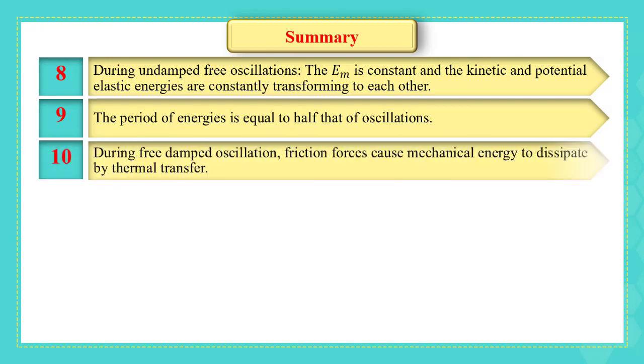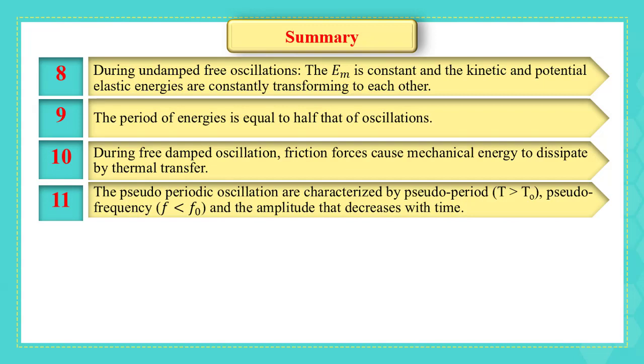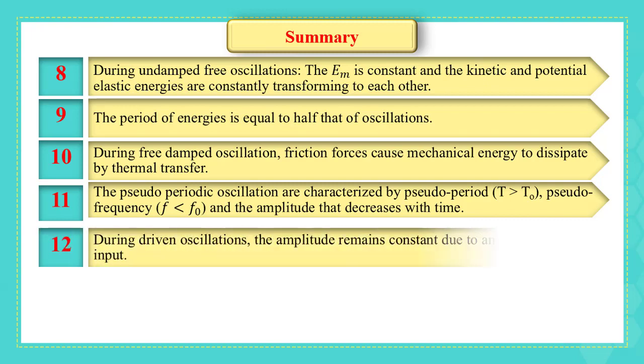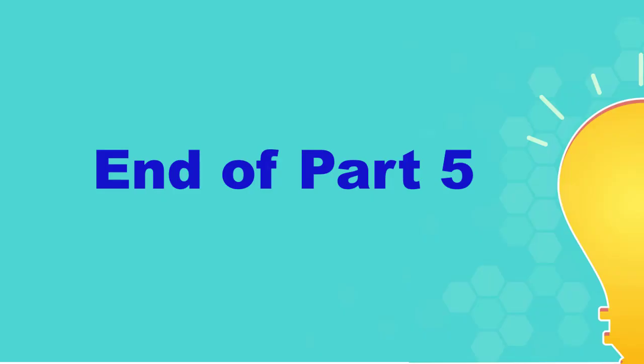During free-damped oscillations, friction forces cause mechanical energy to dissipate by thermal transfer. The pseudo-periodic oscillations are characterized by pseudo period t which is greater than t0, pseudo frequency f less than f0, and amplitude that decreases with time. During driven oscillations, the amplitude remains constant due to an external energy input. This is the end of part 5 of chapter 4. Thanks for watching.